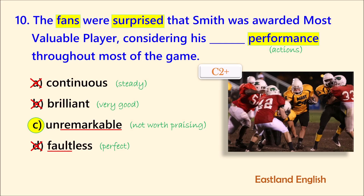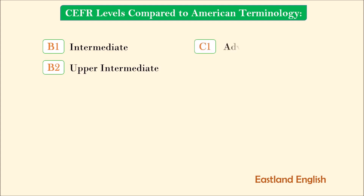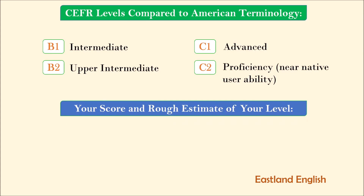Here are the CEFR levels compared to American terminology. A B1 learner would be considered intermediate. B2 is upper intermediate. C1 is the same as advanced. And C2 is proficiency, or near-native user ability. Your score and rough estimates of your level: 1 to 3 equals B1, 4 to 6 equals B2, 7 to 8 equals C1, and 9 to 10 would equal C2.